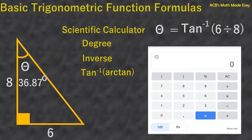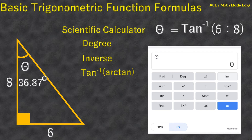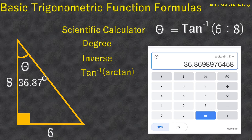Press the FX button to show the other functions. You can see the degree button — press it. Next step is to press the inverse button, the INV one. You can now press arc tangent, and then press the numbers: press 6 divided by 8. Press the close parenthesis and press equals. You will see that the answer is 36.87 degrees.